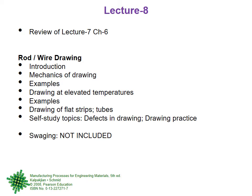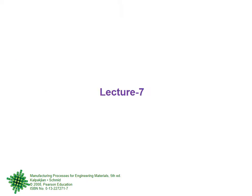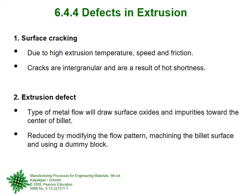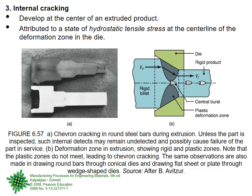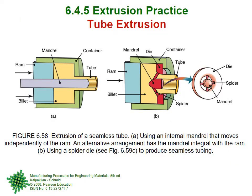So what did we do last time in Lecture 7, to bring you mentally to the right level to start today's lecture? We talked about defects in extrusion, like surface cracking and extrusion defects. We talked about internal cracking, showed actual and schematic diagrams for it. Then we talked about the practice of extrusion — one very important thing being tube extrusion, which is hollow extrusion using a mandrel.